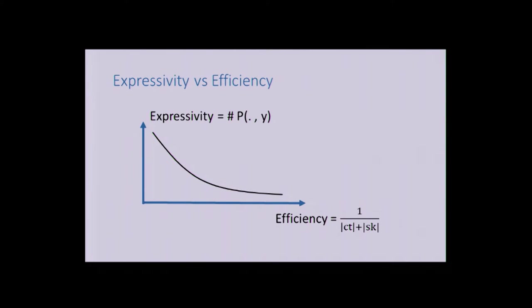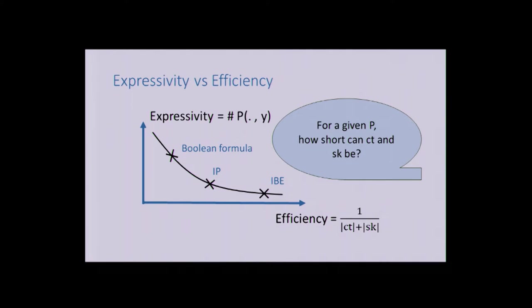What we observe is that the more expressive the predicate P is—meaning the number of access policies you can specify is high—the less efficient it is. IBE is quite efficient, the best you can hope for, but not very expressive. Inner product is more expressive but less efficient, and so on. The question we can ask is: can you do both expressive and efficient? For a given predicate P, what is the best we can hope for in terms of secret key and ciphertext size? This is a question we partially answer in this paper.